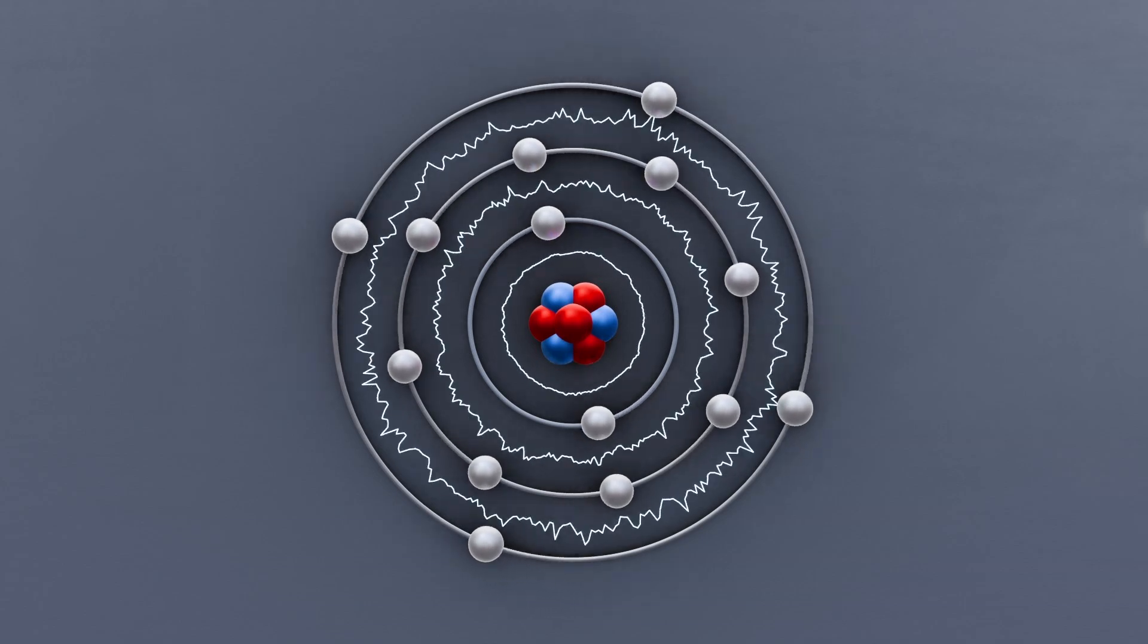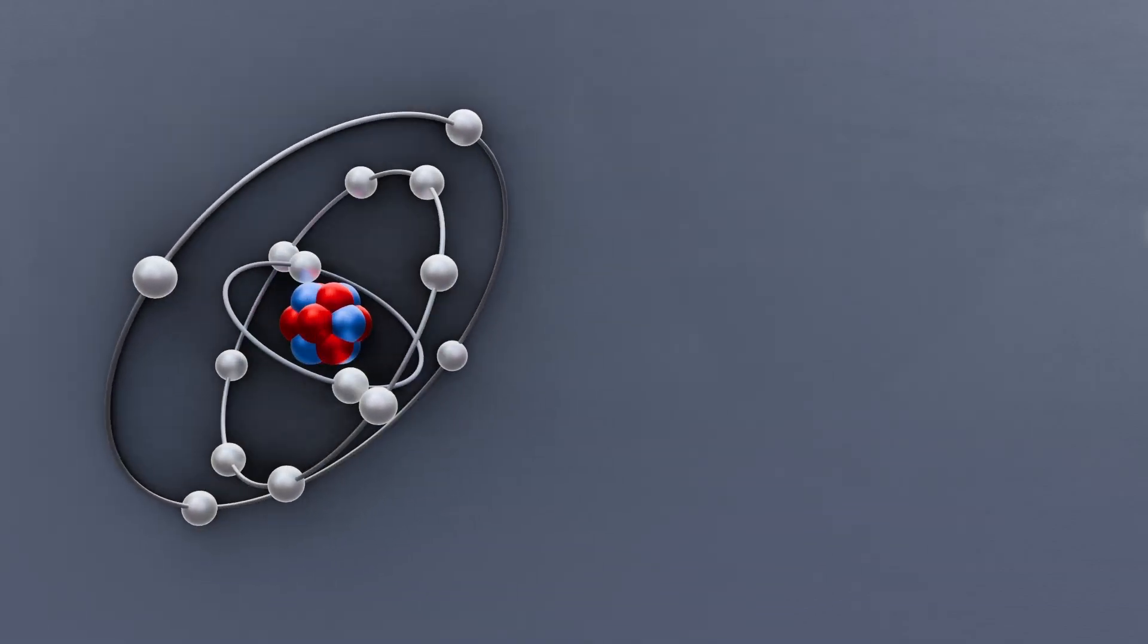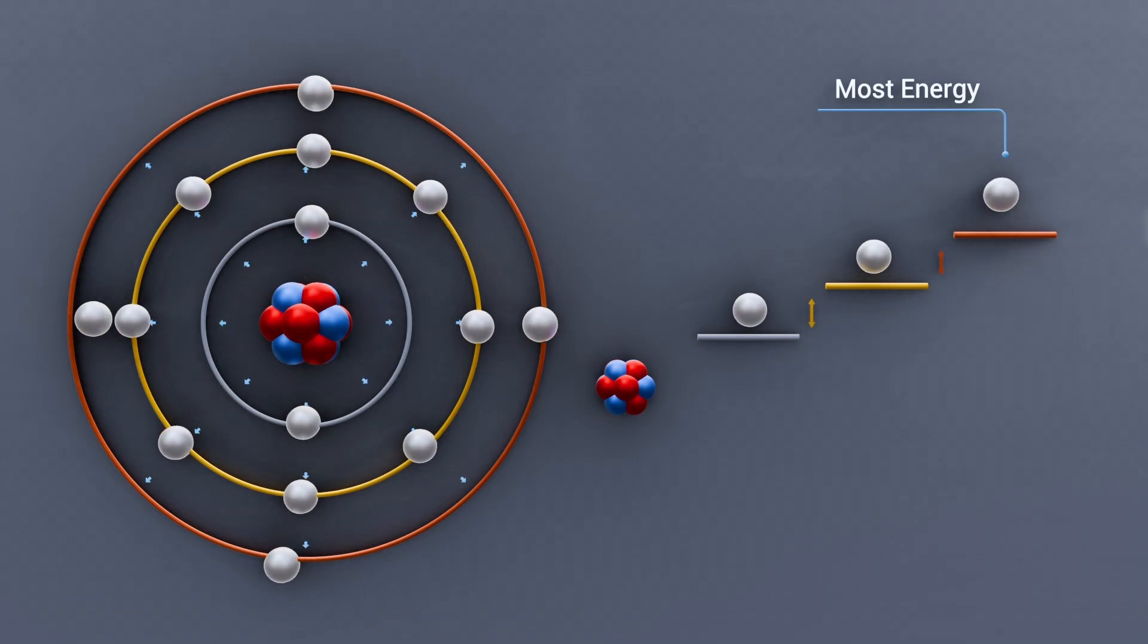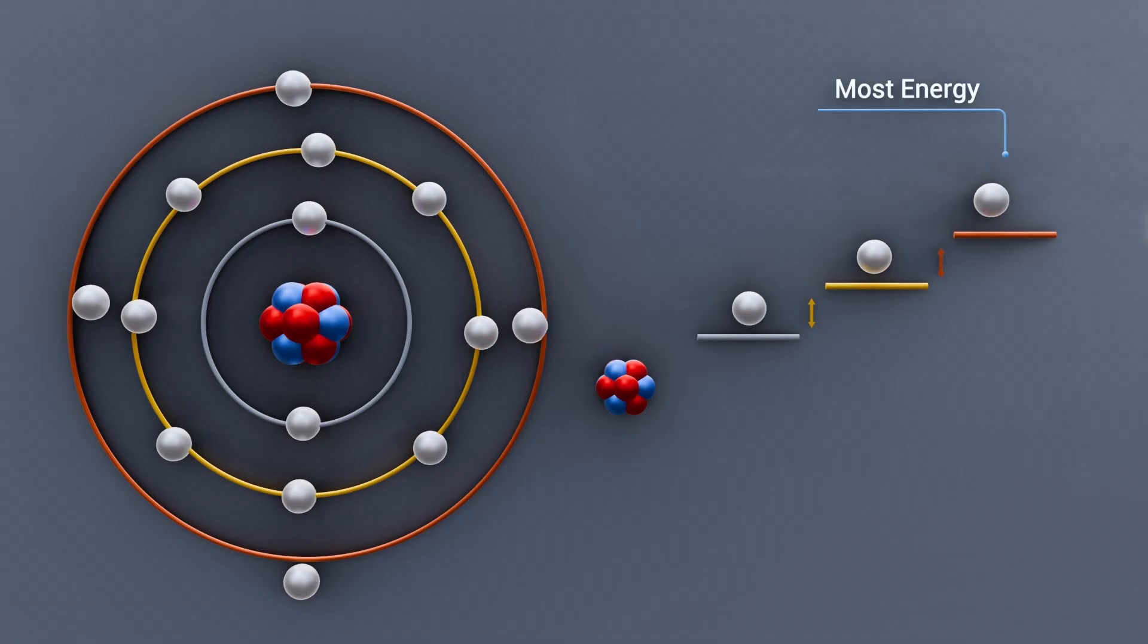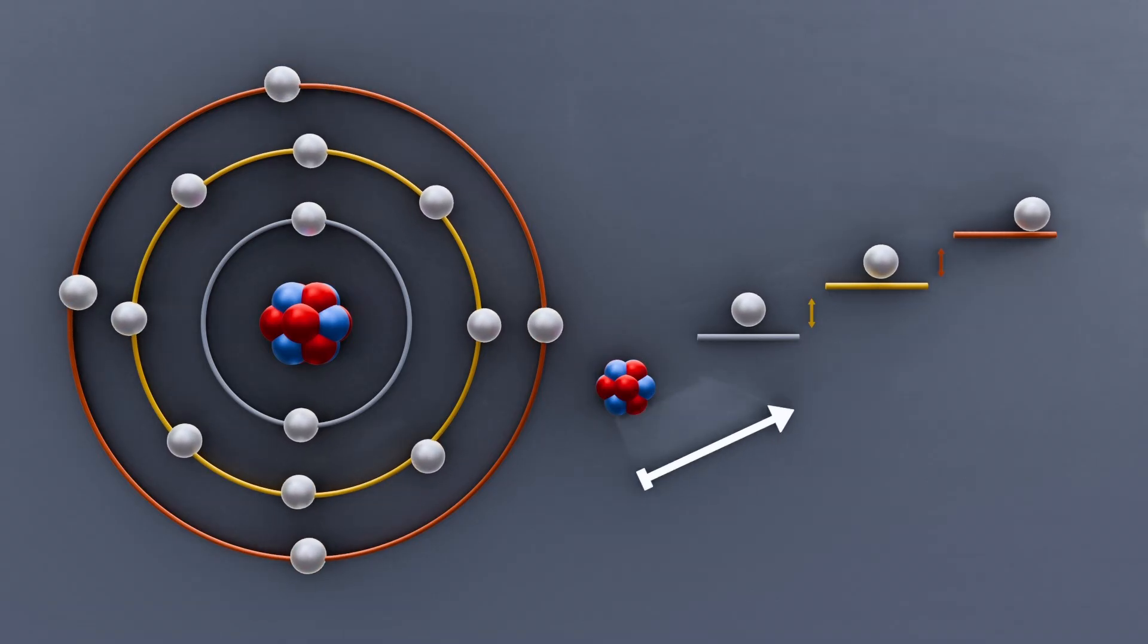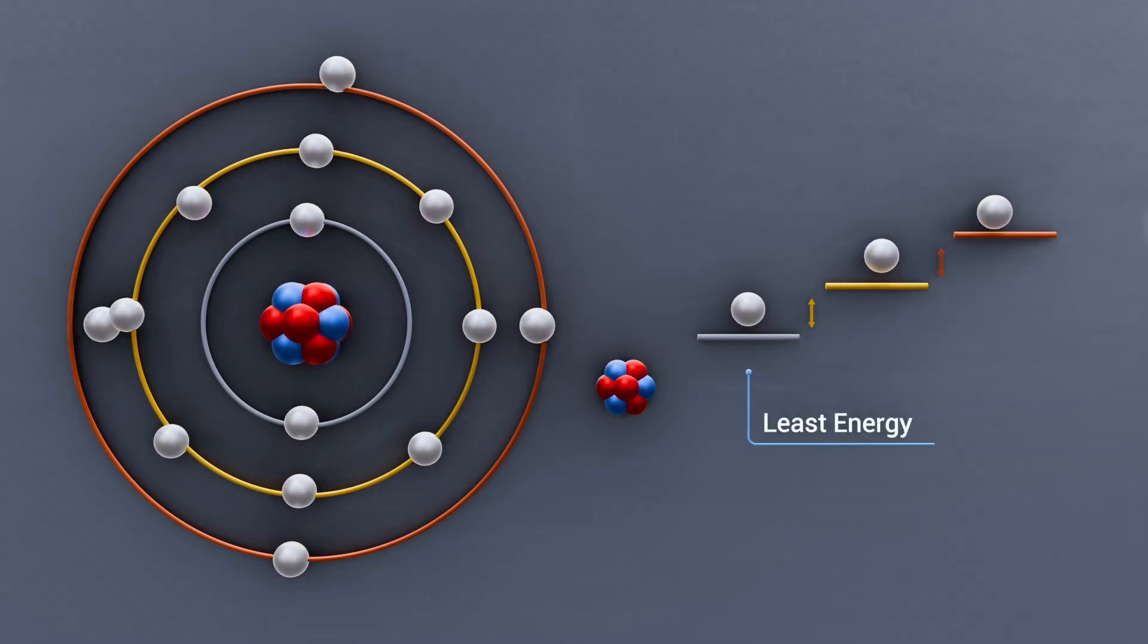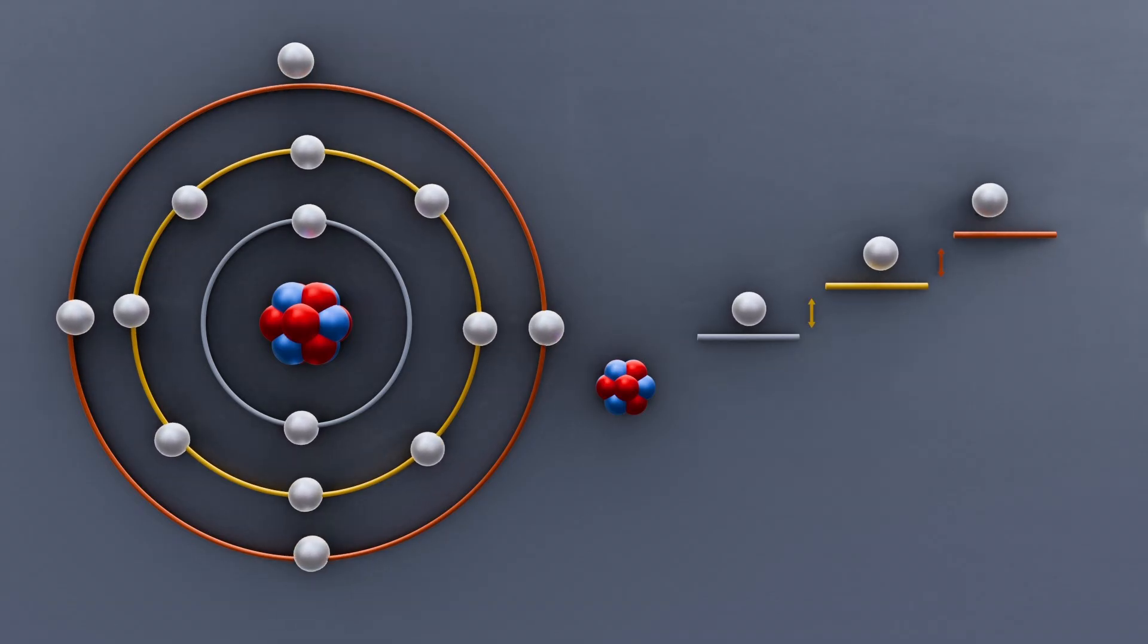The further the distance of the shell from the nucleus, the more energy is required from the electron to move into that shell and the more energy the electrons within that shell have. This is because the farther away from the nucleus an electron is, the less effect the opposite charge from the nucleus, which is positive, has on the electron, ergo increasing its electrostatic potential energy. Electrons closer to the nucleus also shield the outer electrons from some of the effects of the nucleus. This is explained via Coulomb's law.